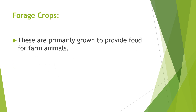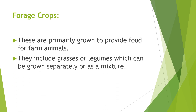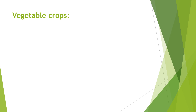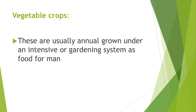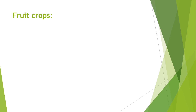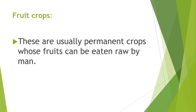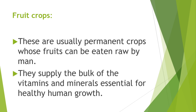Forage crops are primarily grown to provide food for farm animals. They include grasses or legumes which can be grown separately or as a mixture. Vegetable crops are usually annual, grown under an intensive or gardening system as food for man. Fruit crops are usually permanent crops whose fruits can be eaten raw by man, supplying the bulk of the vitamins and minerals essential for healthy human growth.